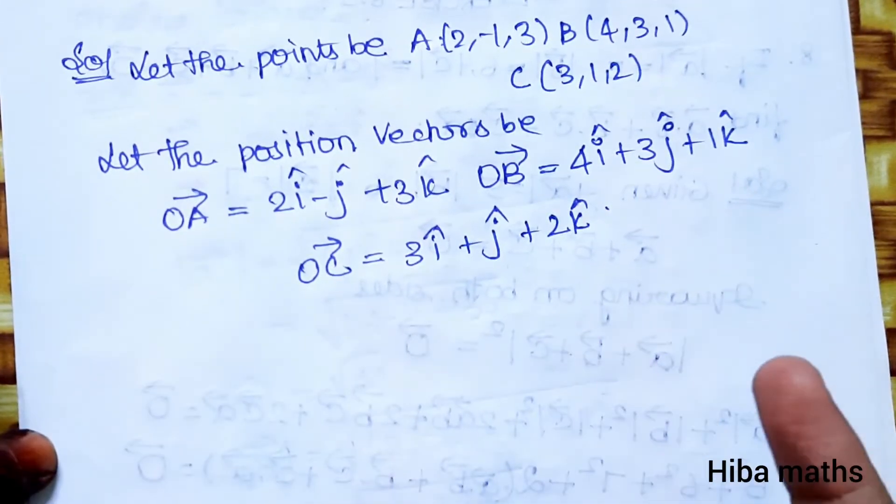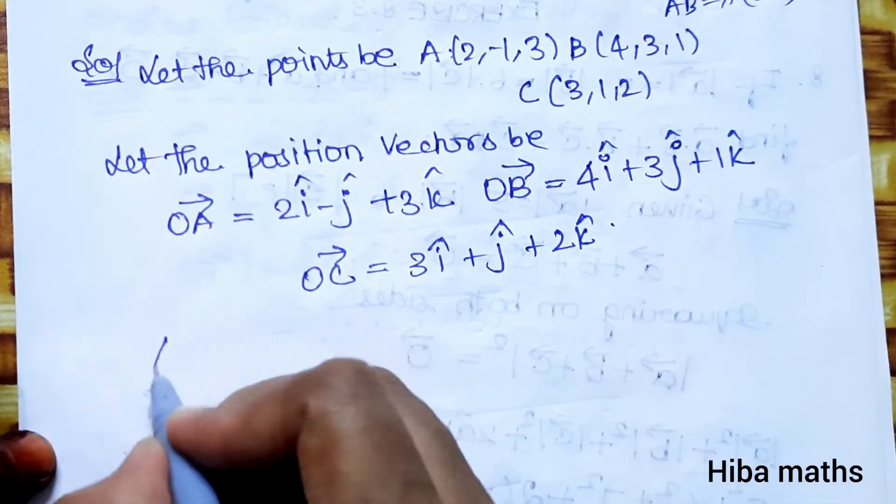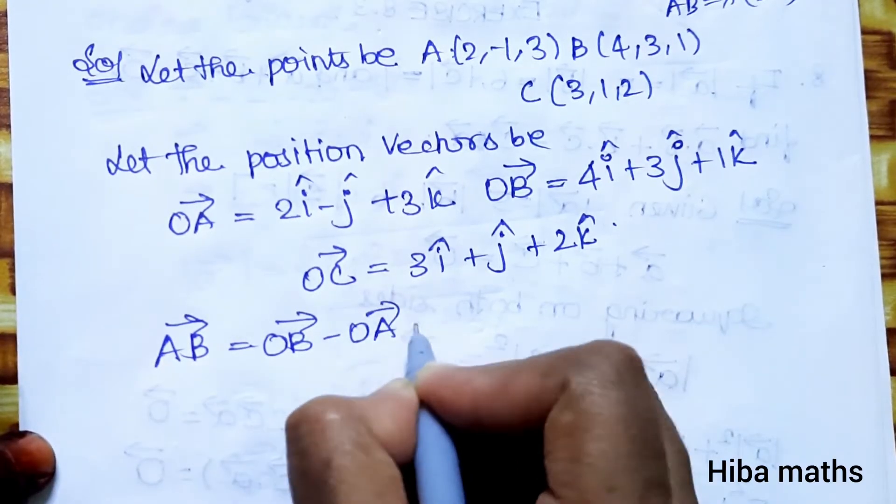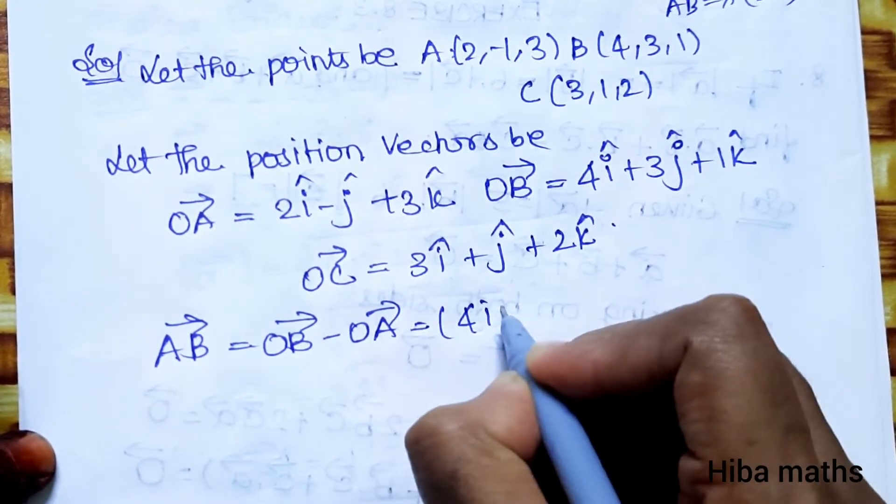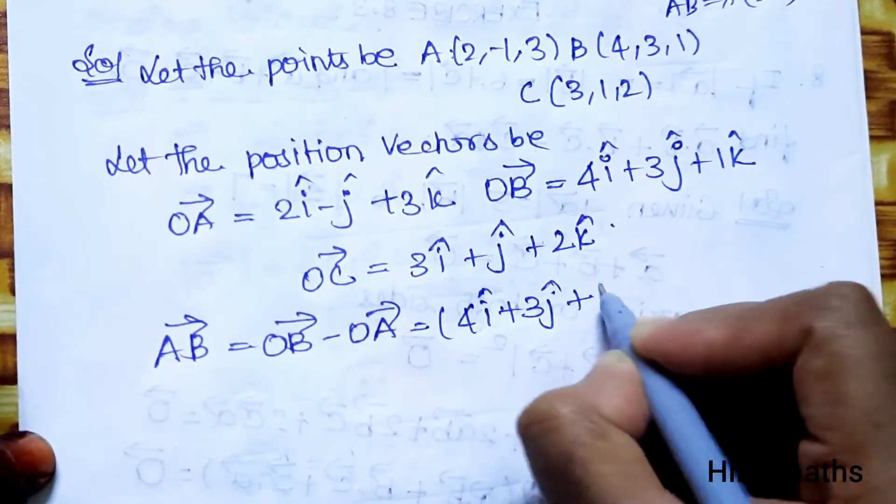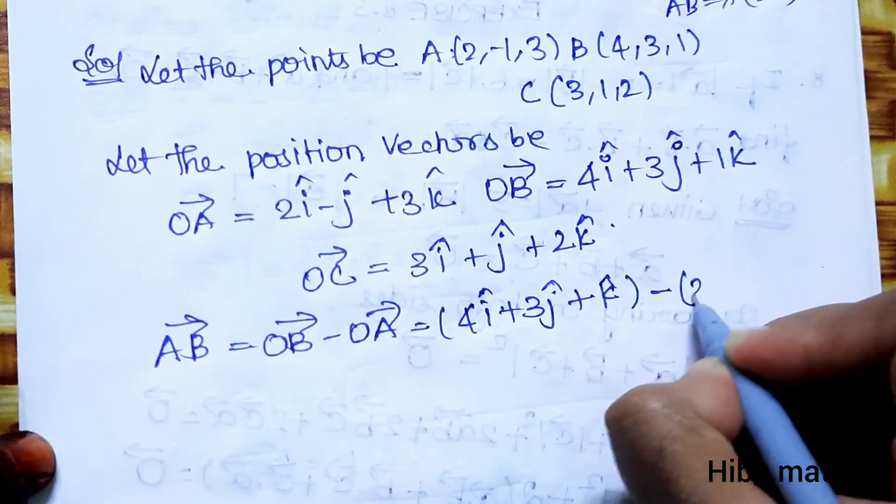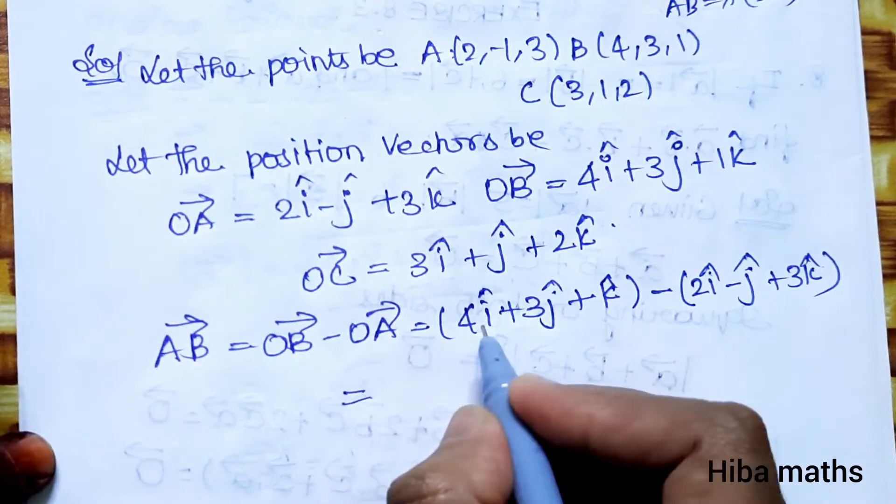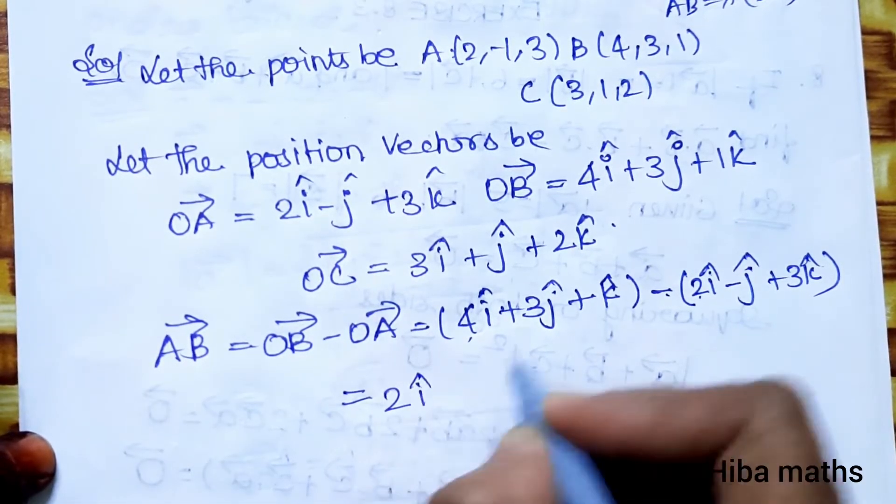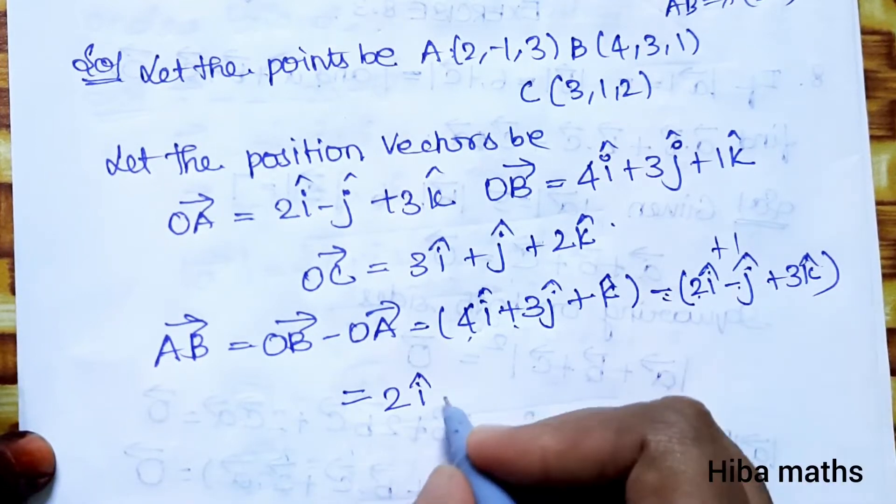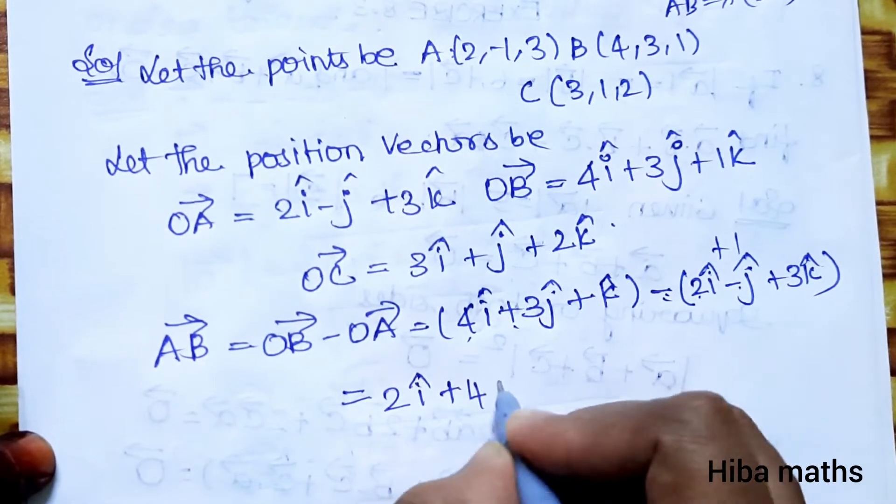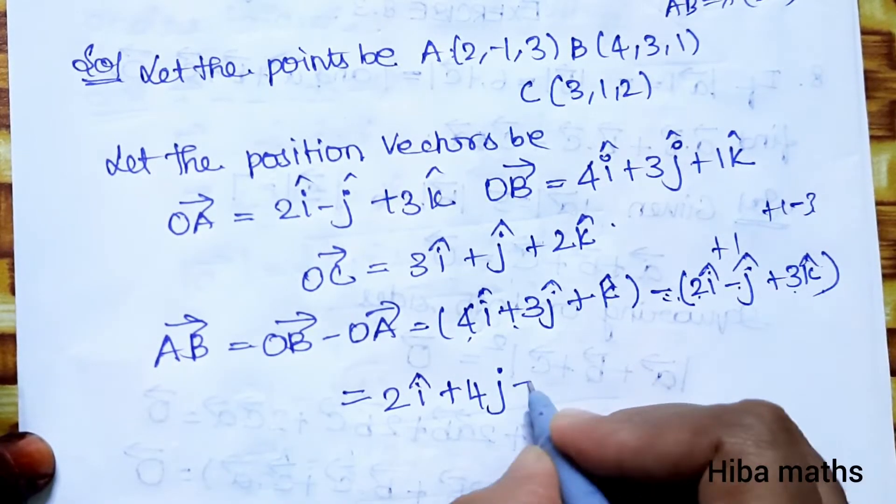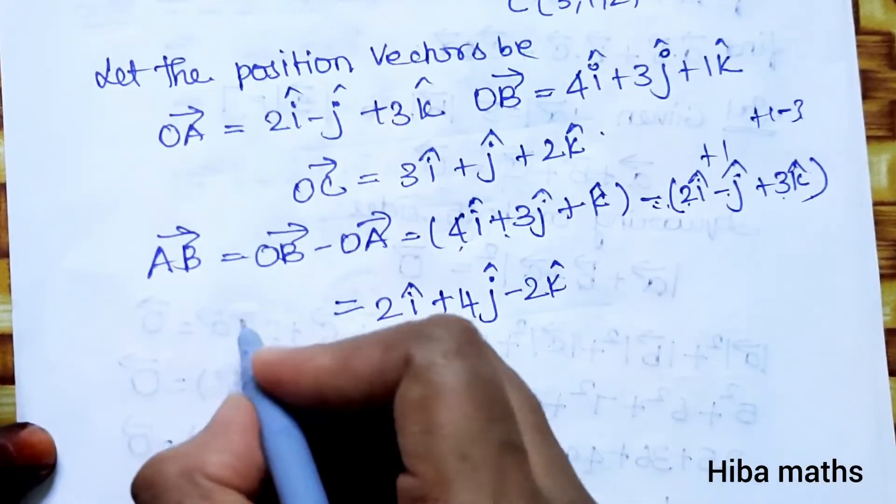First, AB vector. AB vector = OB vector - OA vector = (4i + 3j + k) - (2i - j + 3k). That equals (4-2)i + (3-(-1))j + (1-3)k = 2i + 4j - 2k. This is the AB vector value.